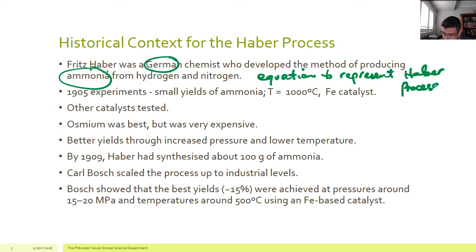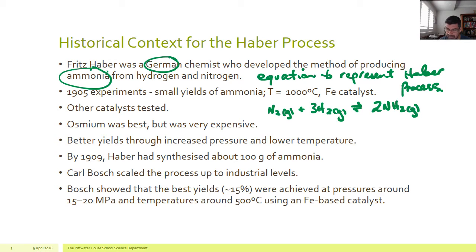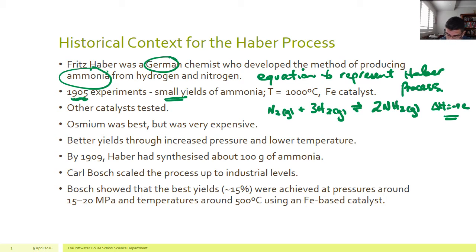I've written that equation out several times, but for repetitive emphasis: make sure you include the states and include an equilibrium arrow with all components. It's also useful to put the ΔH value in, or at least indicate that it's negative — so the reaction is exothermic. At the beginning of the 20th century, Fritz Haber started his experiments. His yields were very small, using high temperature and an iron catalyst.